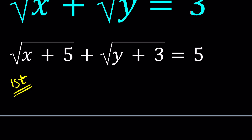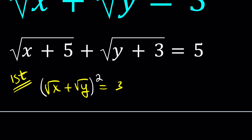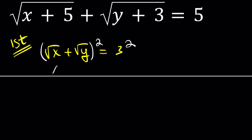For my first method, I'm going to square both sides in the first equation. Starting with square root of x plus square root of y equals 3 and squaring both sides, from the formula we get x plus y plus 2 times the square root of xy is equal to 9. That's going to be our first equation.